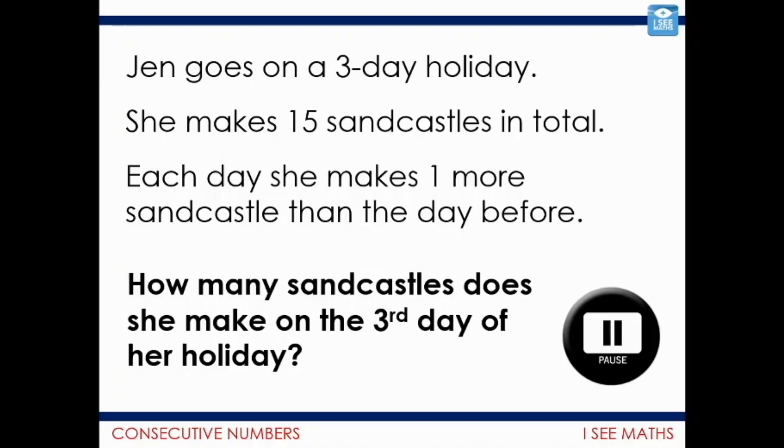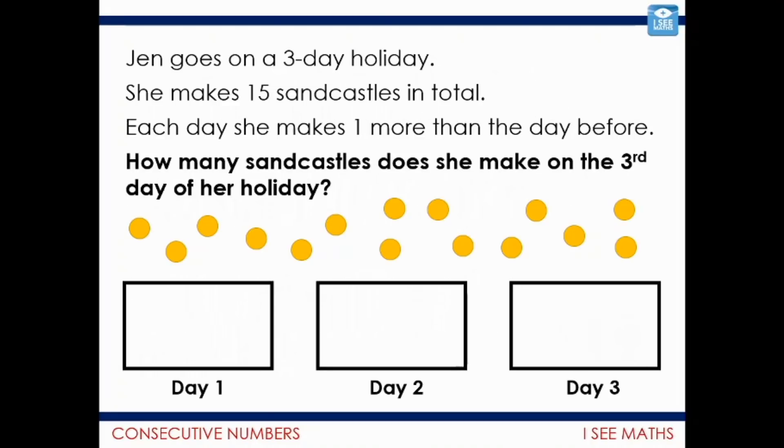Let me bring us back together and have a look at a couple of ways we could see this. So, the dots represent the sandcastles, and there are 15 dots, 15 sandcastles. Let's say I share them equally between the three days of my holiday. That, of course, would be five sandcastles each day. Now, actually, we know that each day she makes one more than the day before. So, actually, there must be more in day three and less in day one. Four, five, and six. The five is almost a middle number.